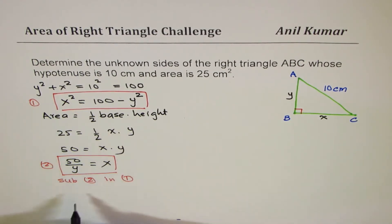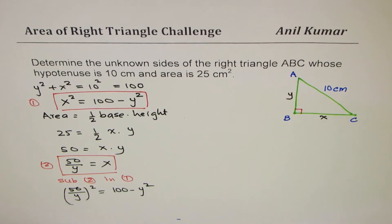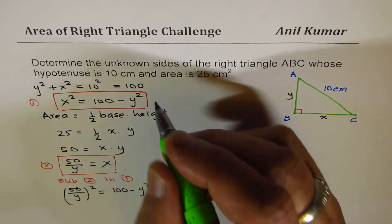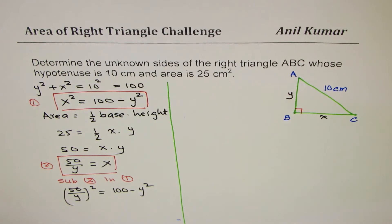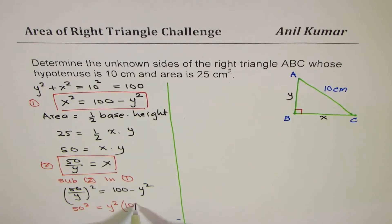So let us substitute 2 in equation 1. So we get 50 over Y whole square equals to 100 minus Y squared. At least we have an equation in one variable. It should not be difficult to solve this one. We can cross multiply and get one equation. So 50 square, let me write this as 50 square equals to Y square times 100 minus Y square.